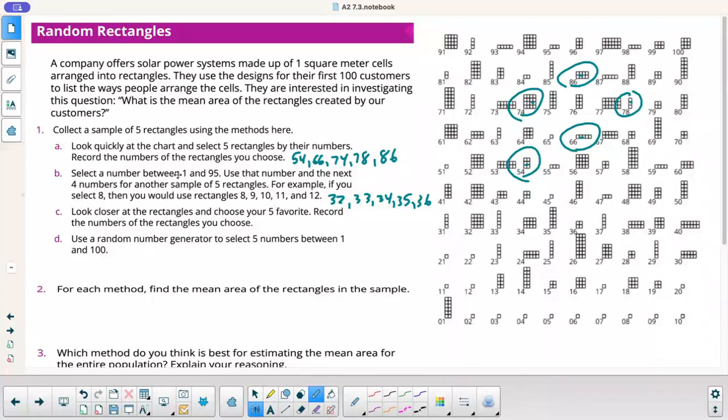Look closer at the rectangles and choose your five favorite. Record the numbers of the... Ooh, my five favorite. I'm going to try to pick ones that are squares. I like squares. Squares are better. They are rectangles, but they're even more specific. So I'm going to choose only squares. So I'm going 18. I guess a 1 by 1 is a square. I'm going to choose 20. 15 is a 2 by 2. Any 4 by 4s? Yeah, 30. No, let's go 42. 42 is a 4 by 4. And that's as big as it goes. So I'll do another 4 by 4. I'll go with 61.